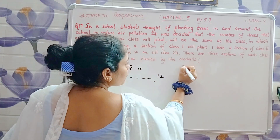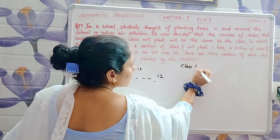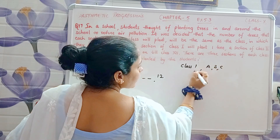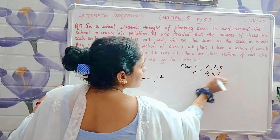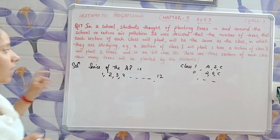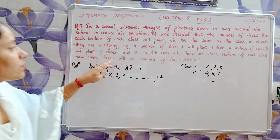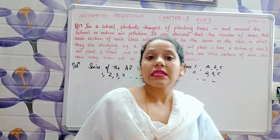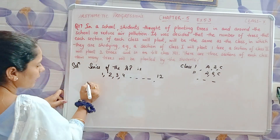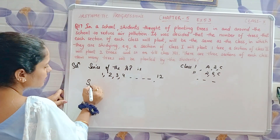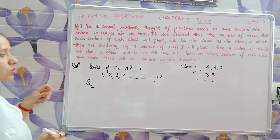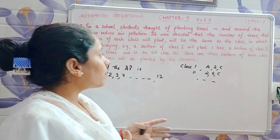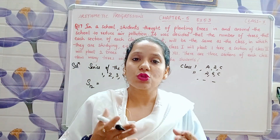Each class has three sections — A, B, C — so class 1 has sections A, B, C, class 2 also has sections A, B, C, and so on. How many trees will be planted by the students in total?